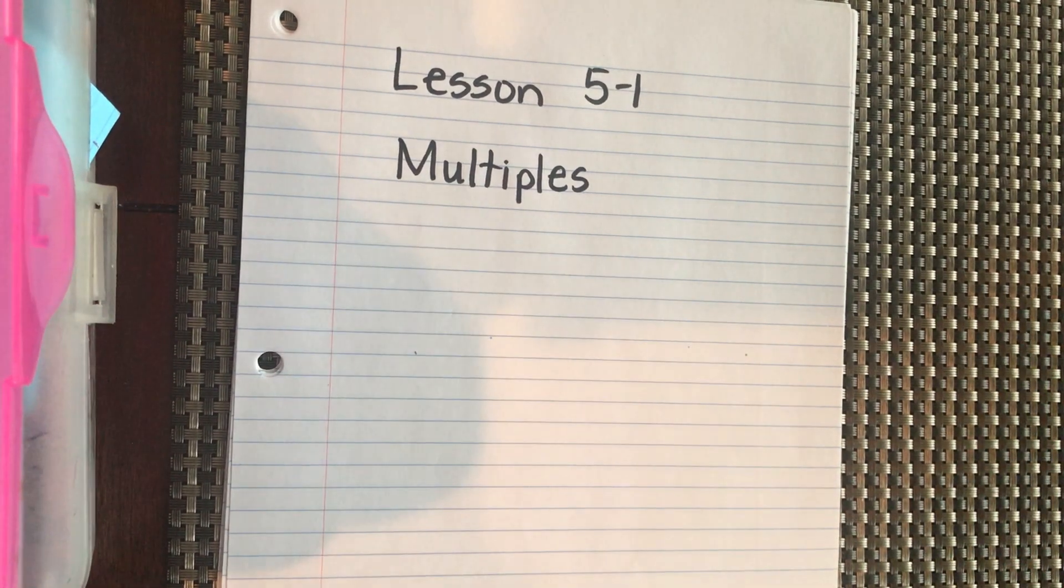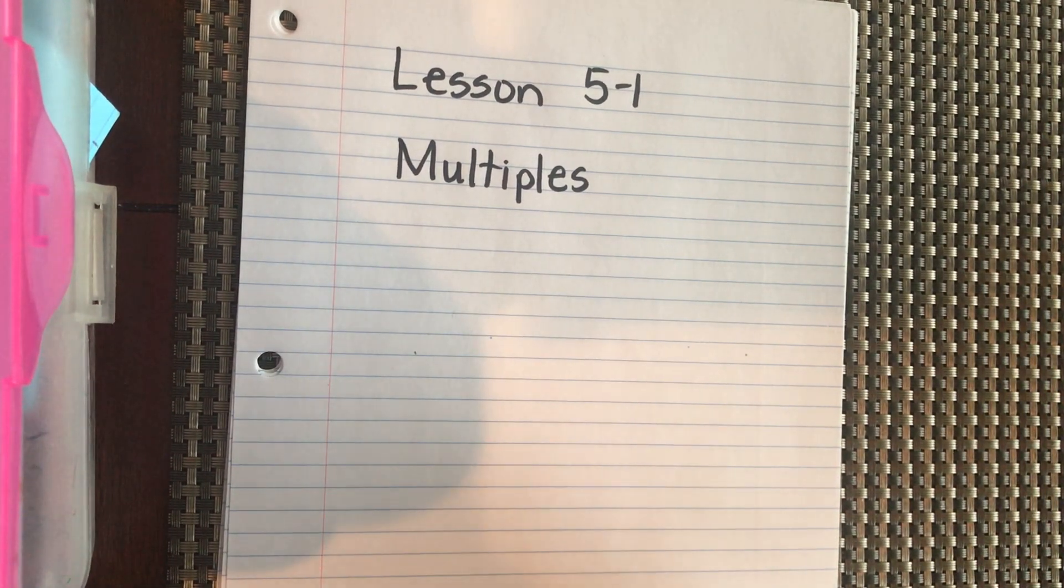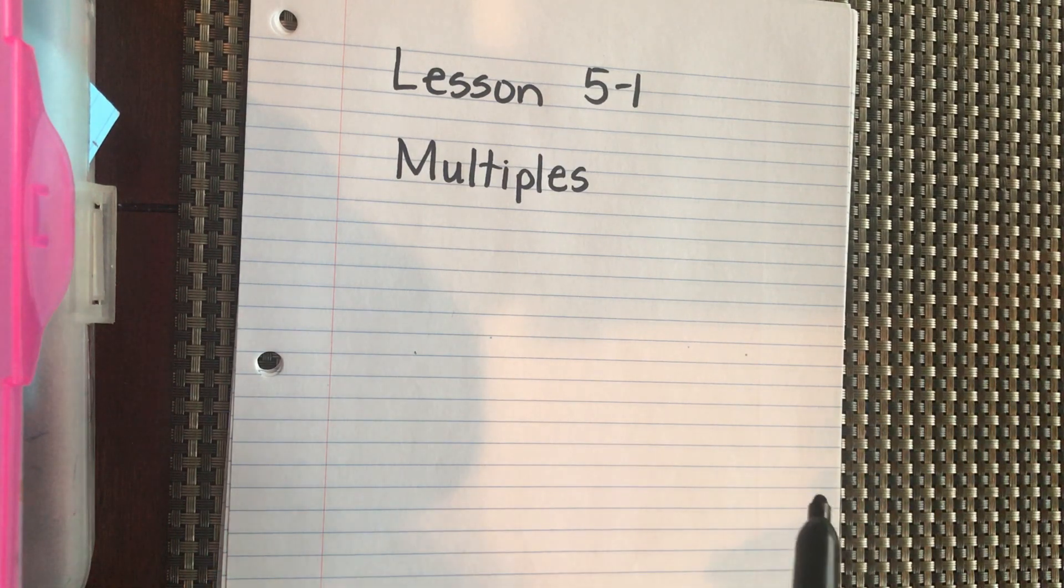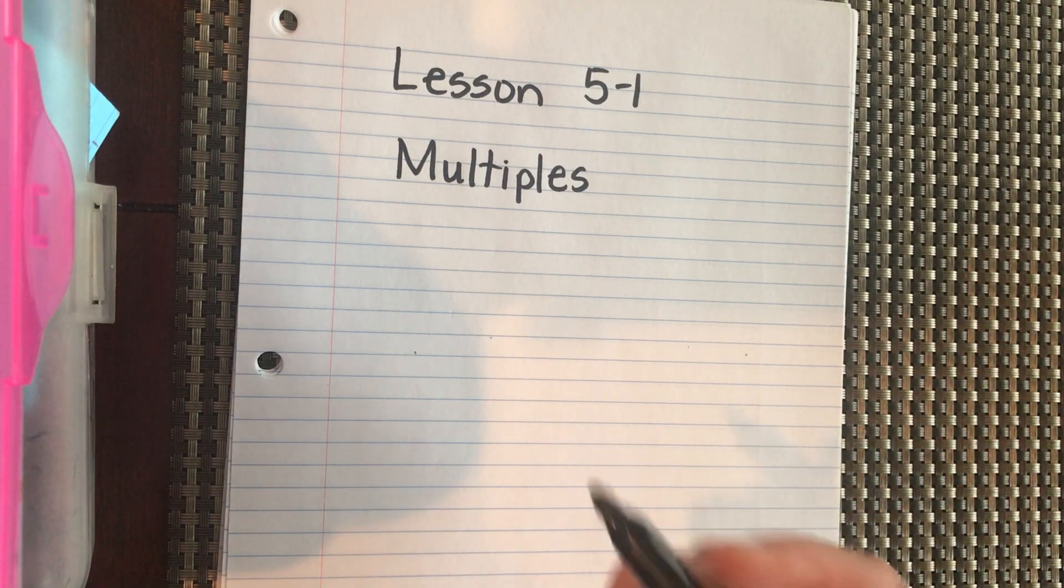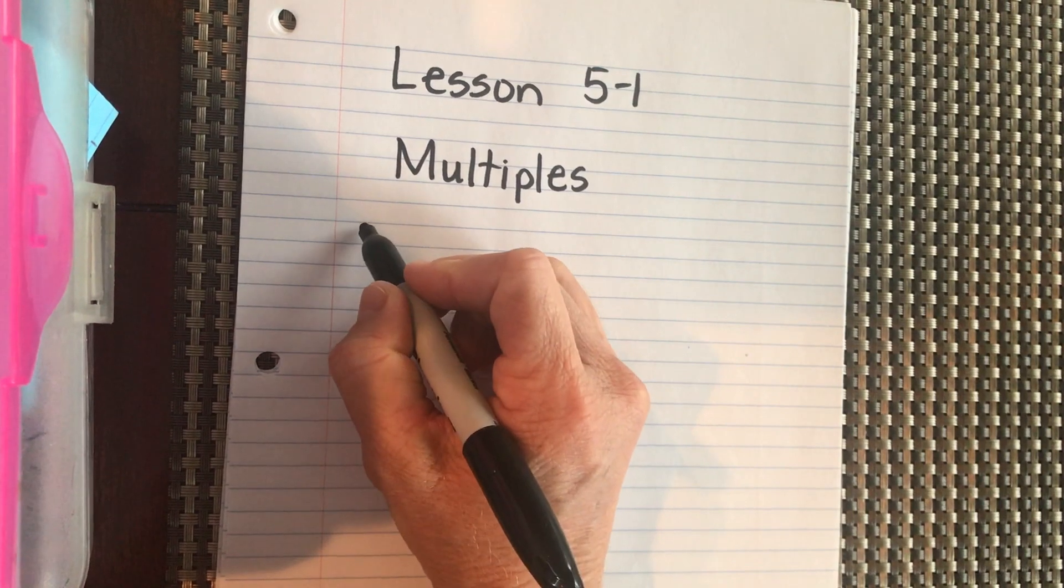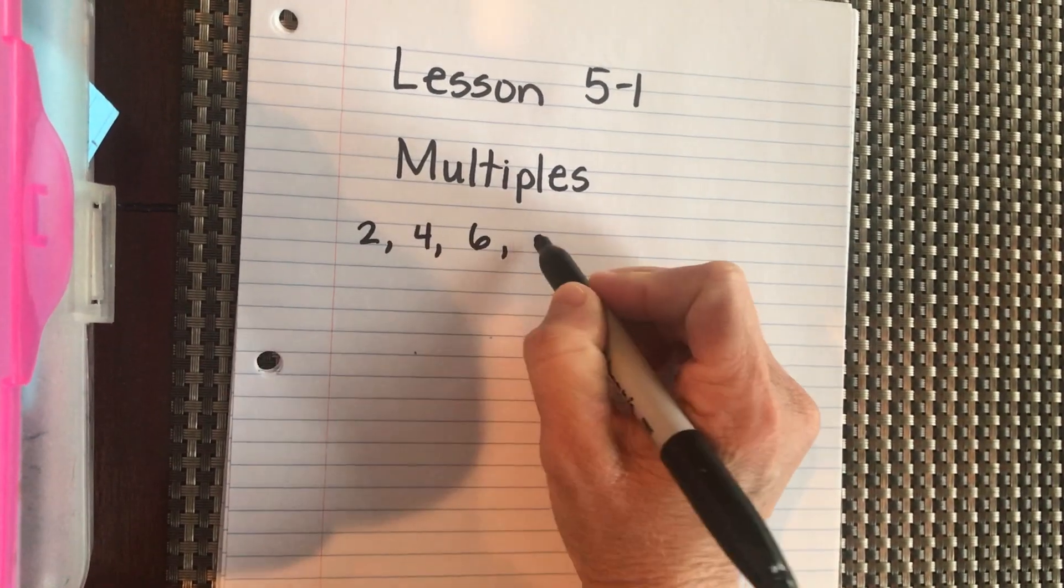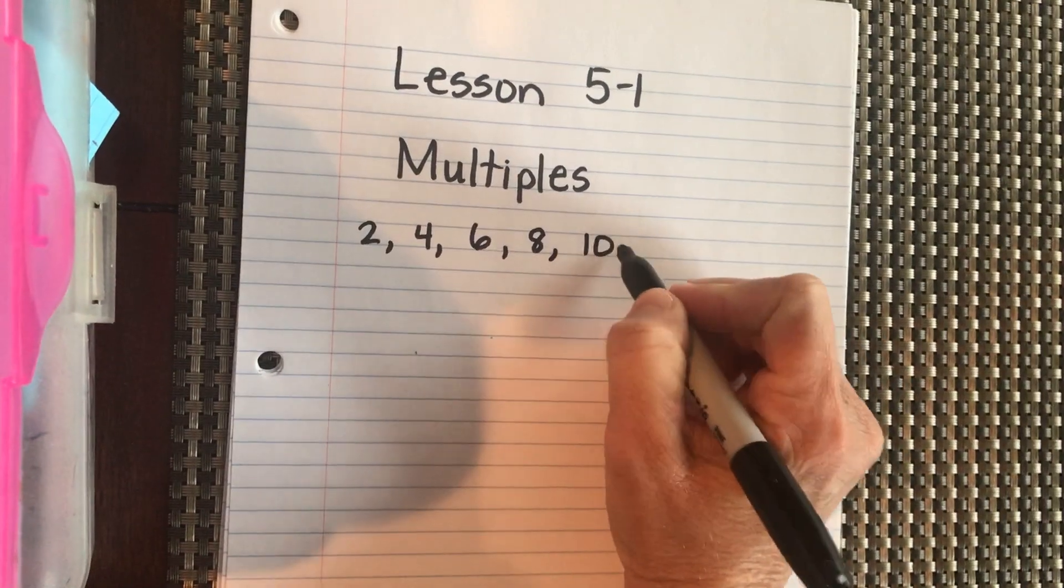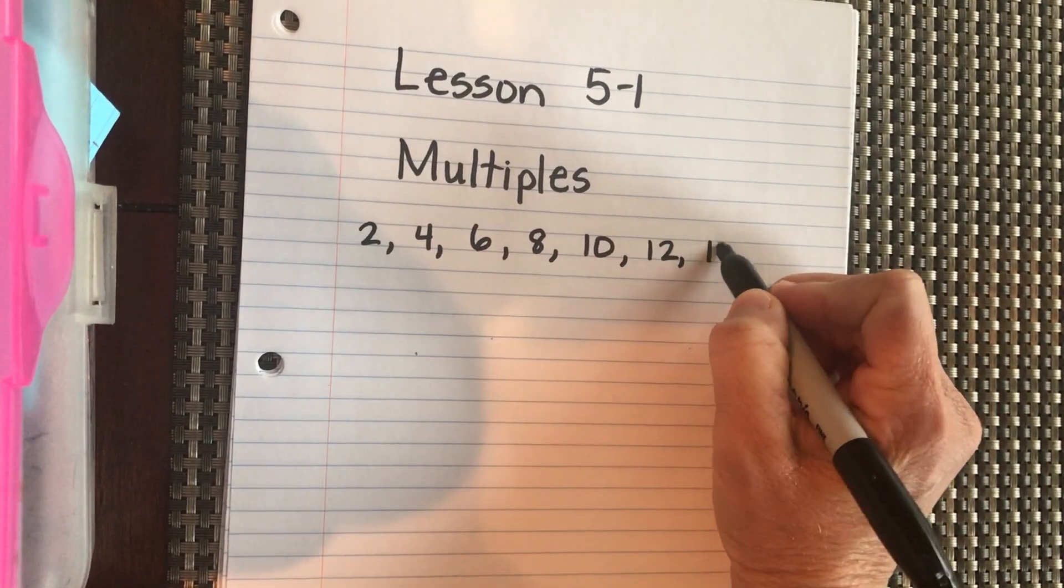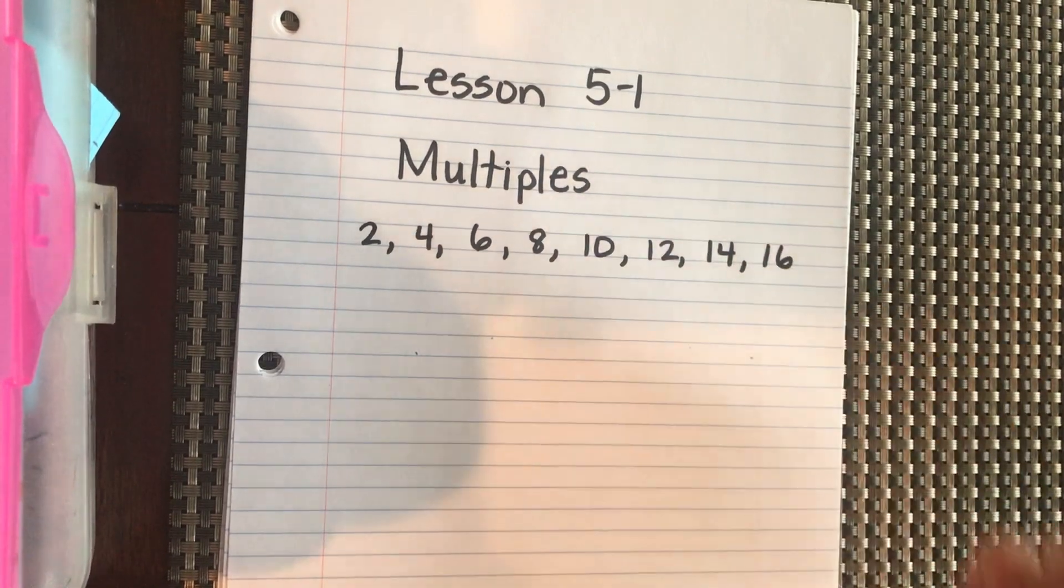Okay, we're going to do lesson 5-1 on multiples. So when we want to find the multiple of a number, we just basically skip count by that number. So if we want to find multiples of 2, it's 2, 4, 6, 8, 10, 12, 14, 16, and on and on it goes.